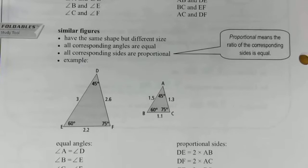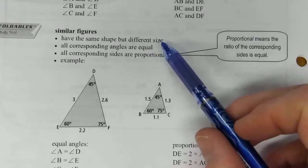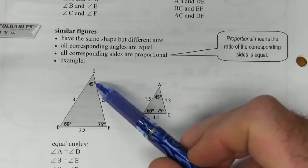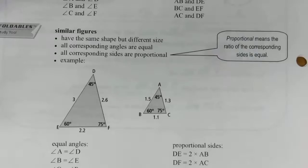Similar figures: triangles can be similar if they have the same shape but different size. So they can look the same, just a different size, and then they're considered similar. If all of the corresponding angles are the same on the two different triangles, then they're considered similar. Or if all of the corresponding sides are proportional. Proportional means that the ratio of the corresponding sides is equal.